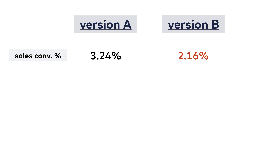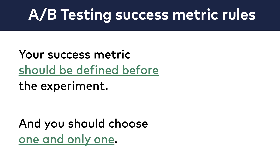If it's green, your new version has won. If it's red, your new version has lost. It should be as simple as that. So take my word — you want to choose one metric, and you want to commit to it before you start your experiment.